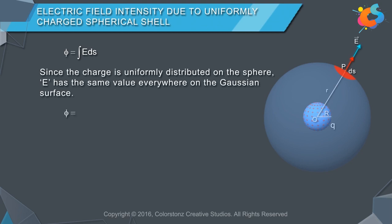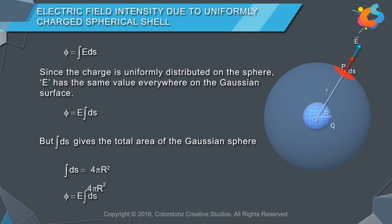φ = E ∫ds. But ∫ds gives the total area of the Gaussian sphere. ∫ds = 4πr². Thus, φ = E × 4πr².